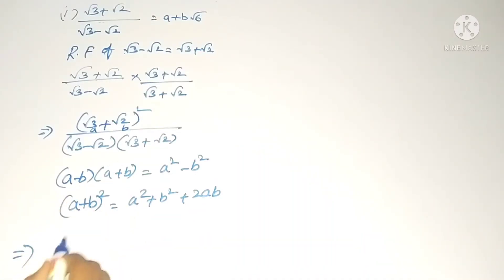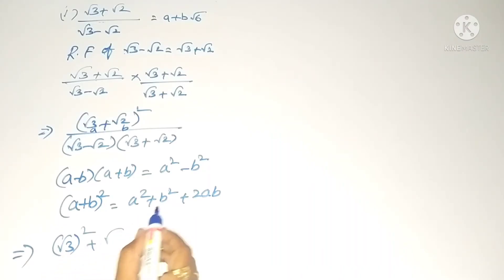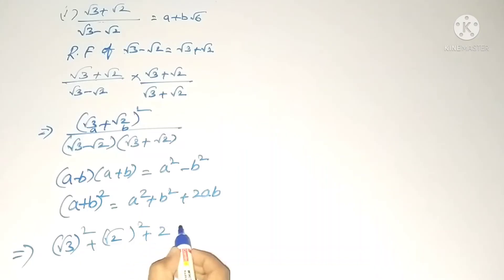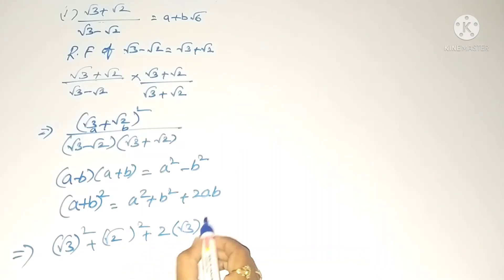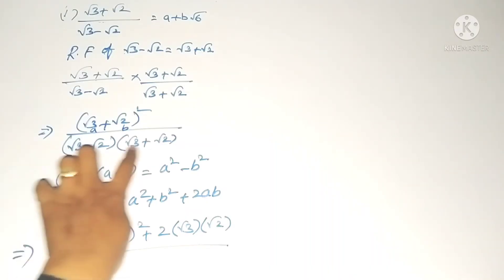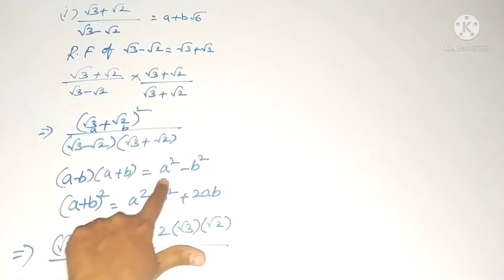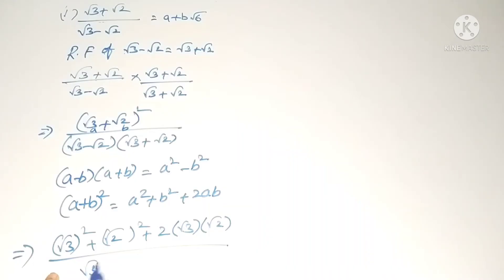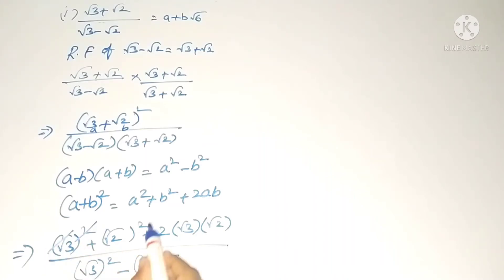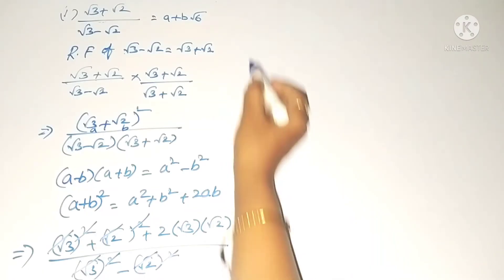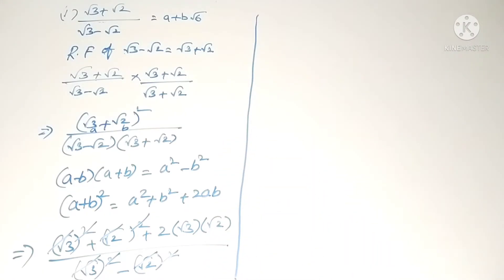(√3 + √2)² expands to (√3)² + (√2)² + 2·√3·√2. For the denominator, using (a − b)(a + b) = a² − b², we get (√3)² − (√2)². The square and root cancel each other out.